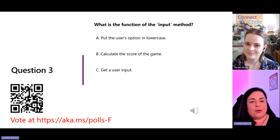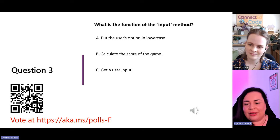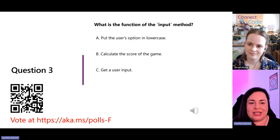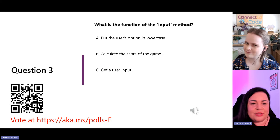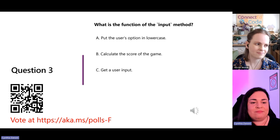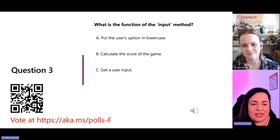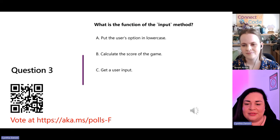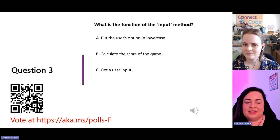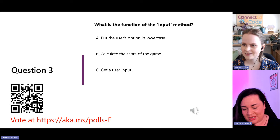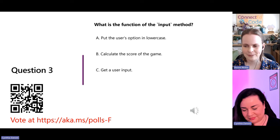Copilot is also handy because it actually teaches you better programming practices in terms of the structure of code. When we generated the big chunks of code, it showed us a whole section — you can see patterns like using if and several elifs, which is great if you're new to Python. Let's look at the answer: A — put the user's option in lowercase. We actually didn't include the lower method in our algorithm today, but it's useful for dealing with user input validation. Let's see the third question.